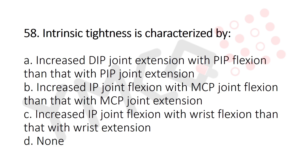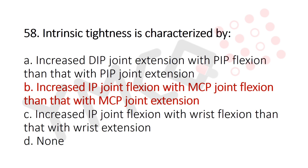Question 58: Intrinsic tightness is characterized by — Option A: increased DIP joint extension with PIP flexion than with PIP joint extension, Option B: increased IP joint flexion with MCP joint flexion than with MCP joint extension, Option C: increased IP joint flexion with wrist flexion than with wrist extension, Option D: none. The answer is Option B, increased IP joint flexion with MCP joint flexion than with MCP joint extension.